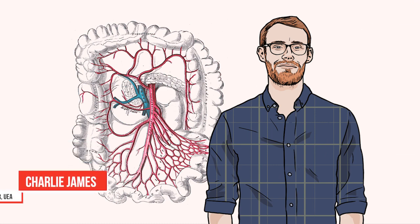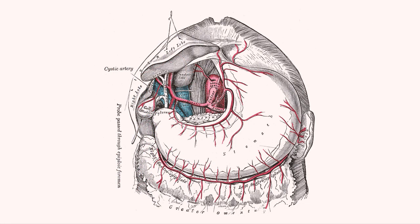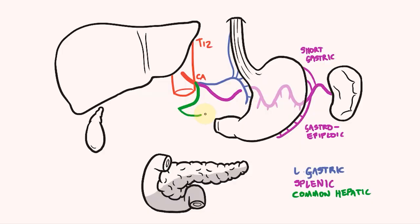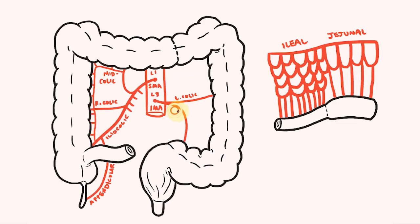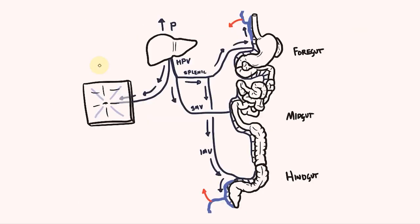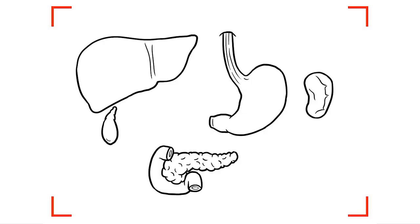Hello. In this playlist I'm going to be drawing out the blood supply to the abdominal organs. I'll start with the arterial supply to the foregut, then move to the midgut and hindgut, before looking at the venous drainage and the portal system. If you want to draw along, you can find links to the illustrations below.